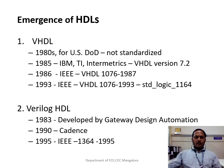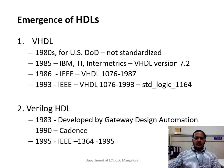They gave a license to three companies - IBM, TI, and Intel. After that in 1985, they developed this HDL language first, and it got standardized as version 7.2. After that in 1986, it was standardized with IEEE - Institute of Electrical and Electronics Engineers. In 1993, they included some more packages like user-defined types. This is the history of VHDL.